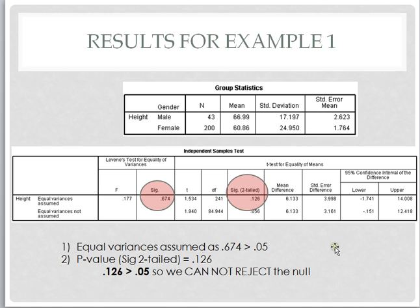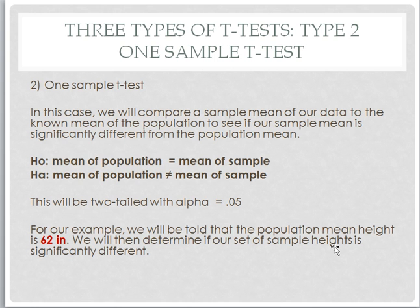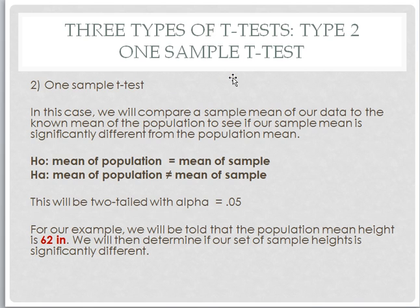Alright, let's look at our second example. In our second example, we're actually looking at what's called a one-sample t-test. In this case, we're going to compare a single sample mean from our data to a known mean of a population. So we're wondering, does our sample differ from the population mean that we know, or is it the same? This is called a single sample t-test because we're only using one sample, and we're comparing it to a known population mean.